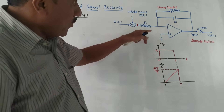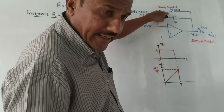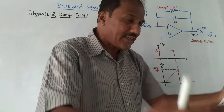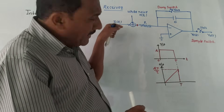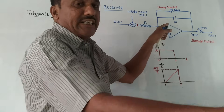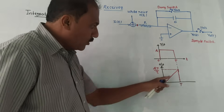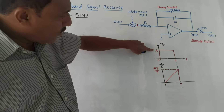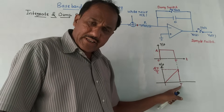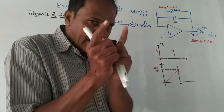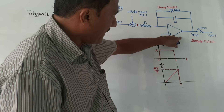Before starting the operation, switch SW1 is closed so that the capacitor gets fully discharged. Then this switch is opened. Whatever bit is received, the integrator performs the integration action on that bit. For a square wave input, you get a somewhat triangular type of output. The integrator output is a triangular signal given by A·t/τ, where capital T or Tb is the bit duration or bit time period.